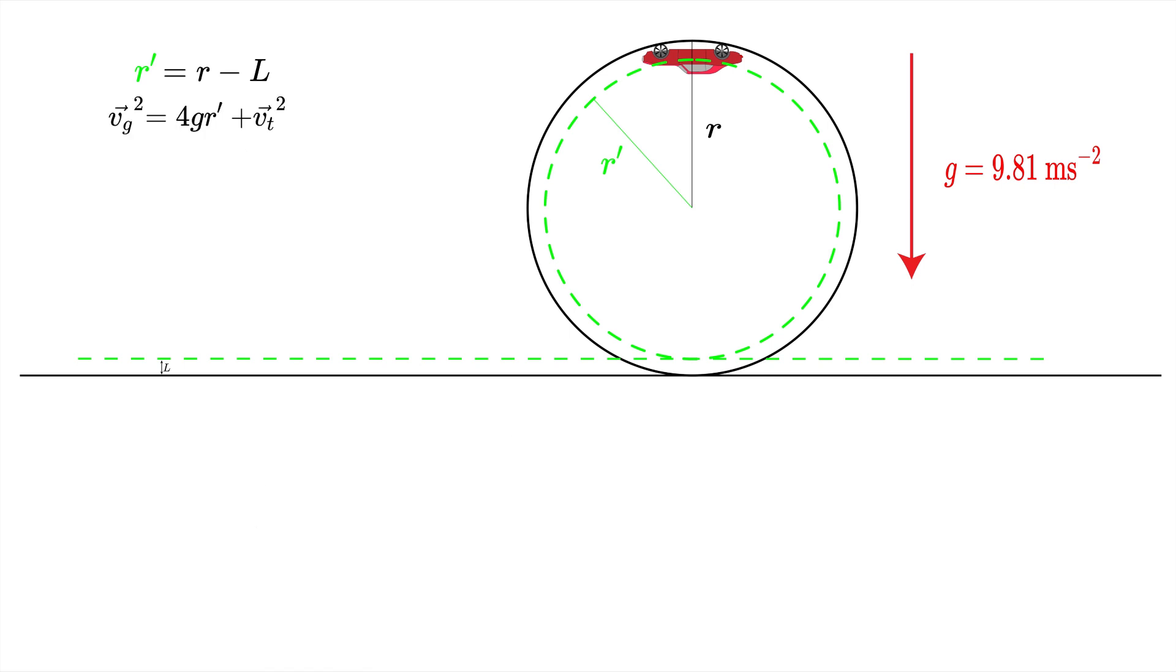So this is what we know so far, but what's the velocity on the top of the loop?